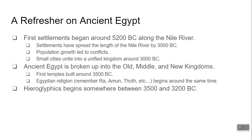The next thing is ancient Egypt — another refresher. Ancient Egypt was part of Africa. The first settlements begin around 5200 BC along the Nile River. It takes about 2,000 years for settlements to spread from the Mediterranean Sea down to the bottom part of the Nile. This population growth leads to conflicts; small cities turn into kingdoms, and those kingdoms are what we talked about with ancient Egypt: the Old Kingdom, the Middle Kingdom, the New Kingdom.